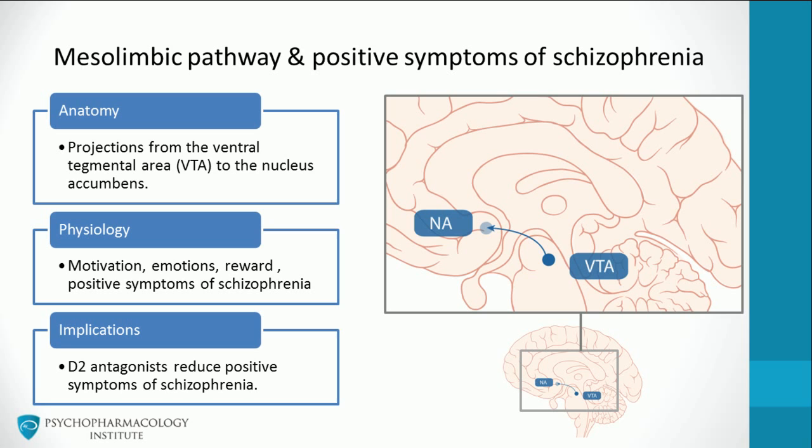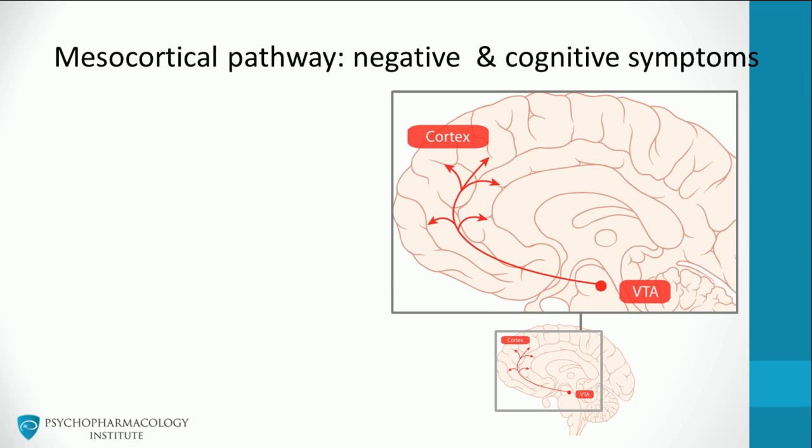D2 antagonists reduce positive symptoms of schizophrenia. All antipsychotic drugs have the ability to reduce dopaminergic neurotransmission. A number of investigators propose that negative and cognitive symptoms of schizophrenia are associated with hypofunction of the mesocortical pathway.